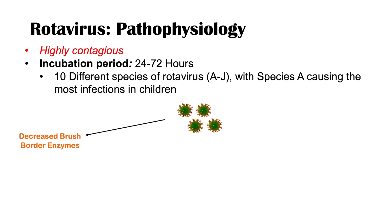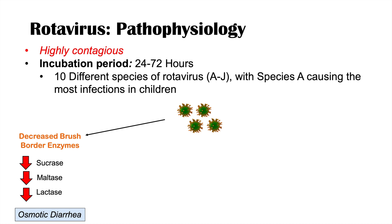Rotavirus decreases brush border enzymes — specifically sucrase, maltase, and lactase — which are important in metabolizing and degrading sugars. Sucrase helps metabolize sucrose, maltase breaks down maltose, and lactase breaks down lactose. If these enzymes can't break down these sugars properly, they aren't absorbed and build up in the gastrointestinal lumen. This draws water from the gastrointestinal mucosa into the lumen, leading to osmotic diarrhea.